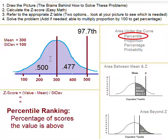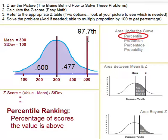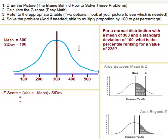For the 97.7 percentile: half the distribution is below the mean, and then we find the area between the mean and z — between the mean of 300 and 500 photos. We find 0.477 in that area between the mean and z table, add the two proportions, and multiply by 100 to get the 97.7 percentile ranking. Now let's solve a specific percentile problem: for a normal distribution with mean 300 and standard deviation 100, what is the percentile ranking for a value of 225?